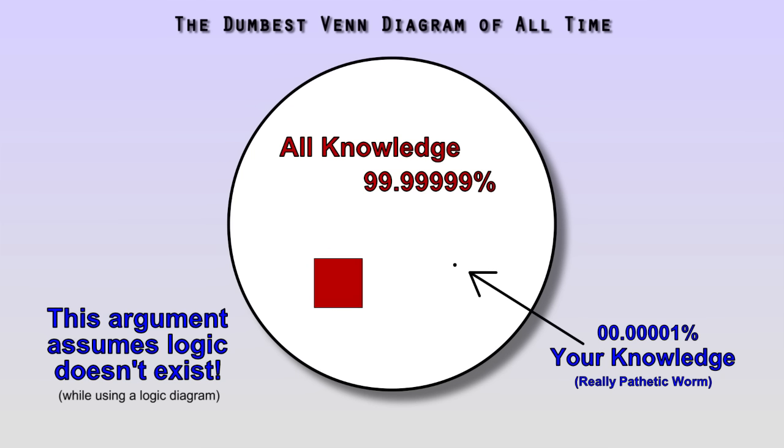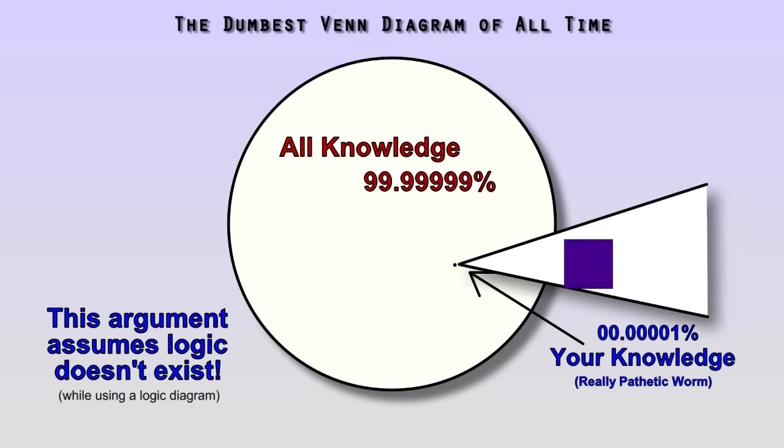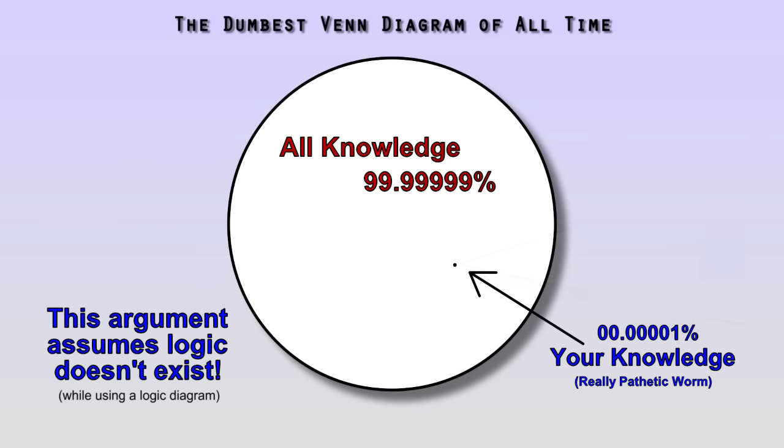Will that convince you that the square circle I describe to you is a coherent concept? No, because your inference about the existence of my square circle, as described, is being drawn not from what you don't know, but from what you do.